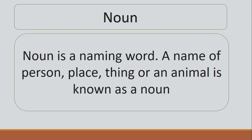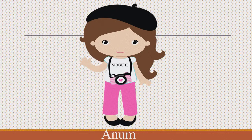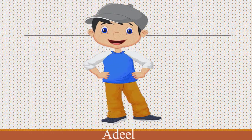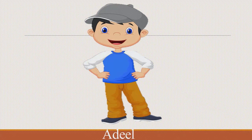For example, in this picture you can see a girl, and her name is Anna. So Anna is the noun — she's a girl and her name is Anna. Now there are so many girls in your classrooms and they have different names, so the names of all the girls are nouns. This is the picture of a boy and his name is Adil. Adil is a noun because it is a name.